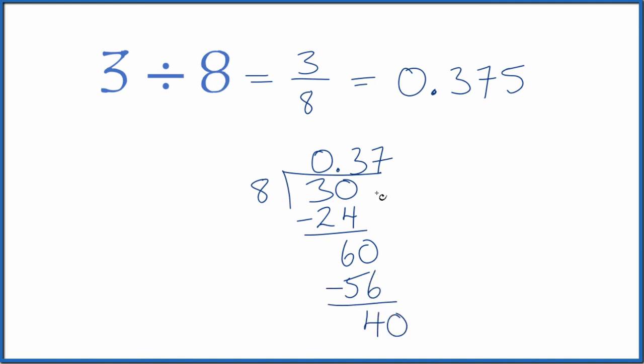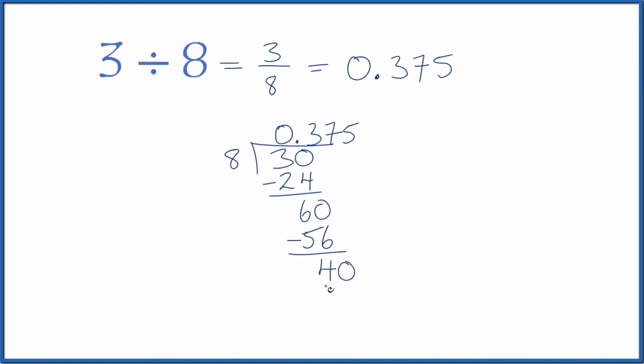We're going to call it 40, move over 1. 5 times 8, that's 40. Now when we subtract, no remainder. So we end up with the same thing before. 3 divided by 8 is 0.375.